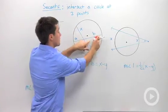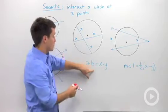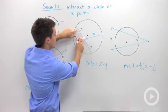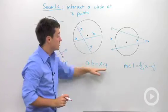So the two pieces of one secant, when you multiply them, is going to equal the two segments of the other segment when you divide them.